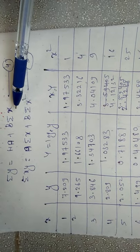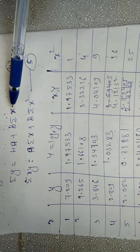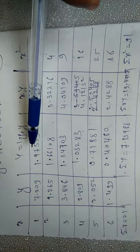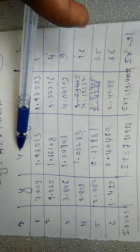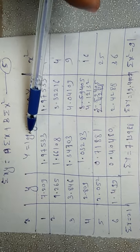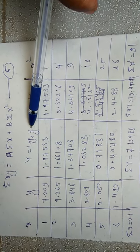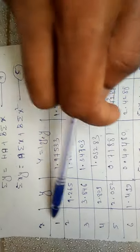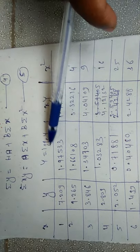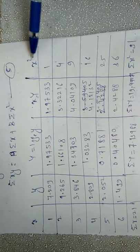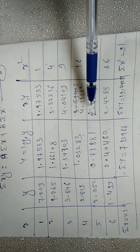For solving these normal equations we will require a table. The values of x are already given, and the values of y are also given. We require summation Y, where capital Y is found by taking the logarithm of small y. We also require xY — multiply small x by capital Y — and x squared, by squaring x. Do all the additions to get the summations.